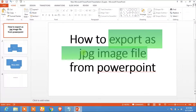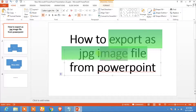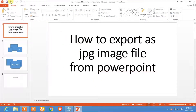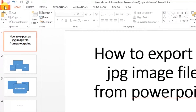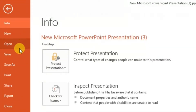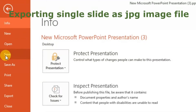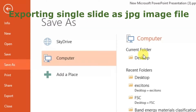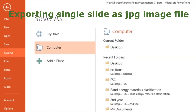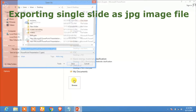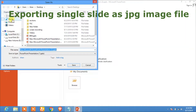Exporting a slide or many slides from Microsoft PowerPoint as JPG image files or as a PDF is very simple. Let's export this slide as a JPG image file. Click on File — in File here you will see the Save and Save As option. Click on Save As, then click on Browse. I will save this slide to the Music folder.